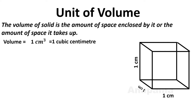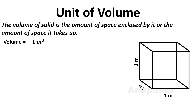We can write it as one cubic centimeter. So centimeter cube, cubic centimeter, or we can write it as cm³ — using 'cu' instead of 'cubic'. These are the ways to write the unit of volume. If the cuboid has sides of one meter each, then the unit of volume changes to meter cube — one meter cube, one cubic meter, or written as m³.